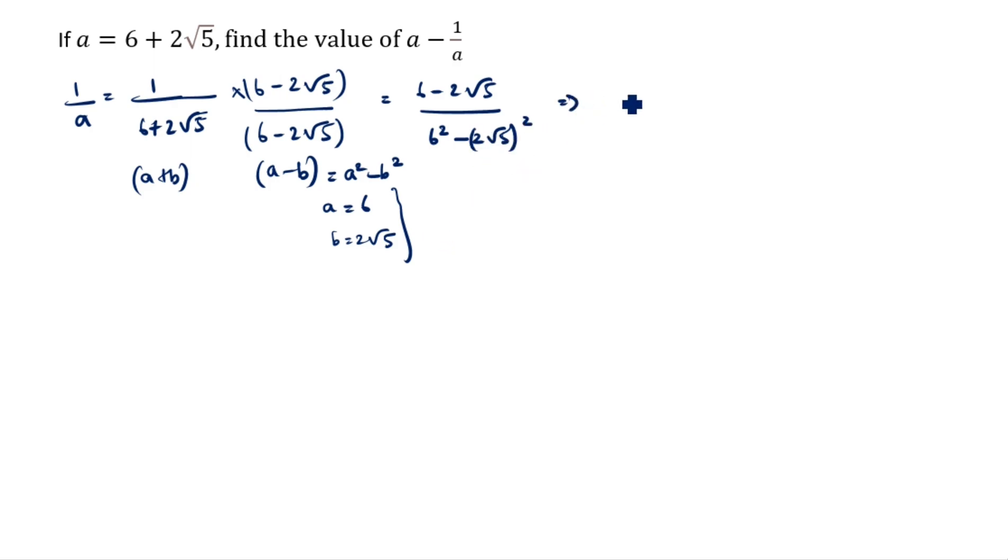So how we will write 6 minus 2 root 5? 6 times 6 is 36 minus 2 into 2 into root 5 into root 5. So what comes? 6 minus 2 root 5 divided by 36 minus, 2 times 2 is 4, root 5 times root 5 is 5, so 4 times 5 is 20. It comes 6 minus 2 root 5 divided by 36 minus 20. What comes? 16.